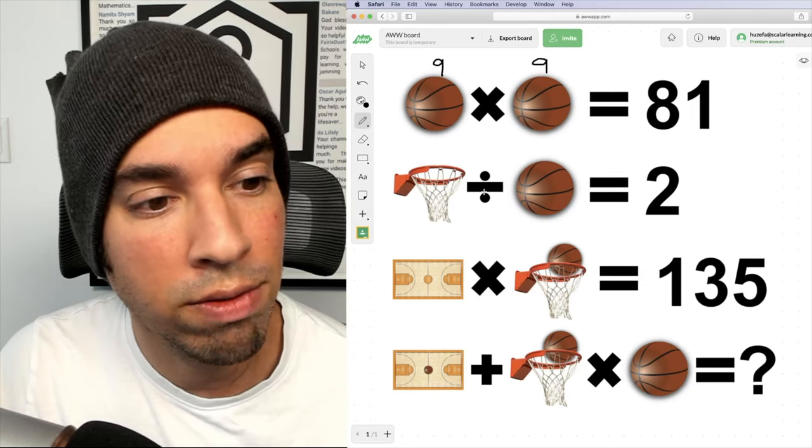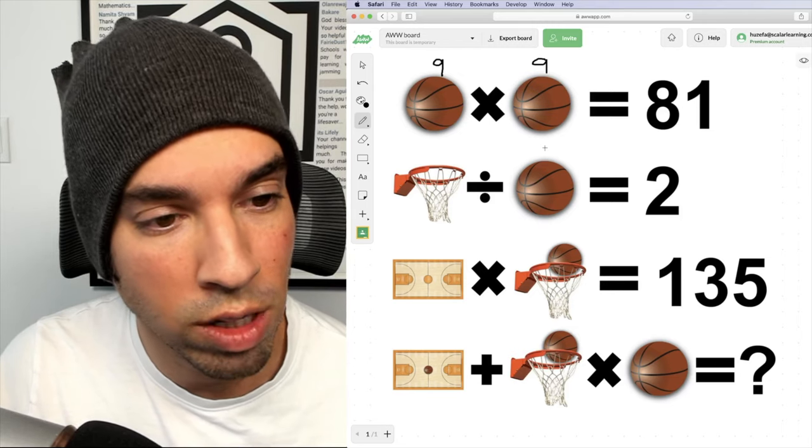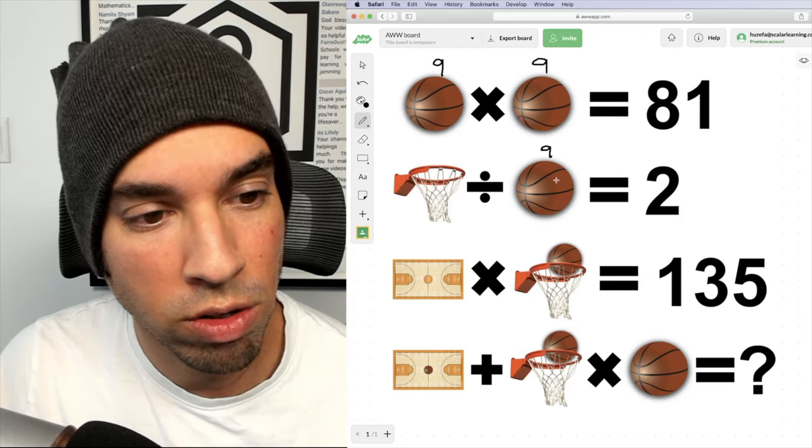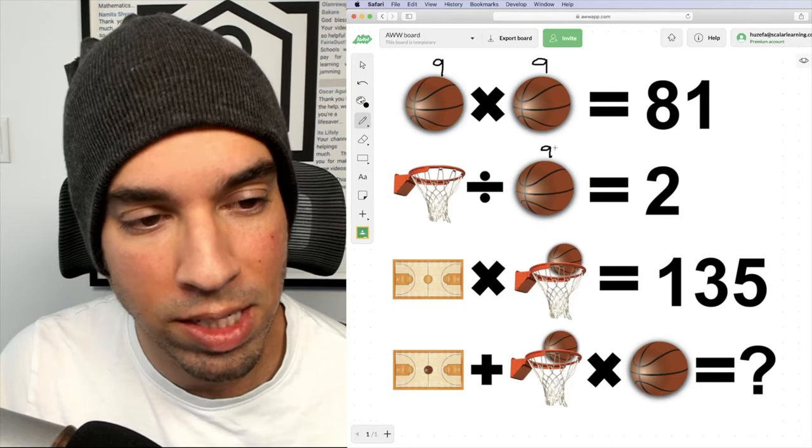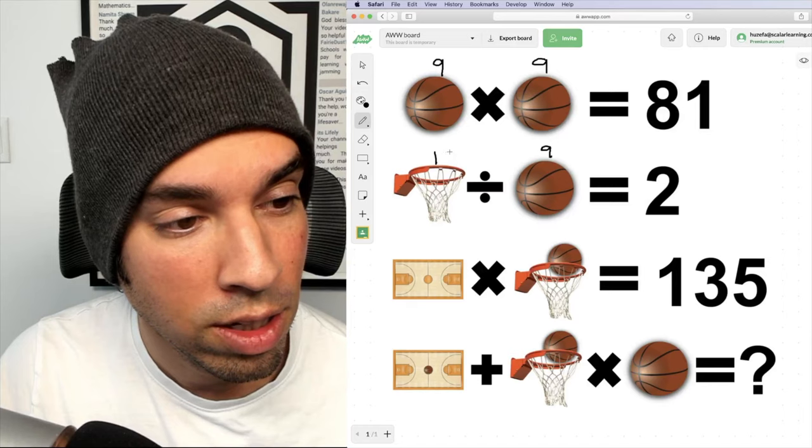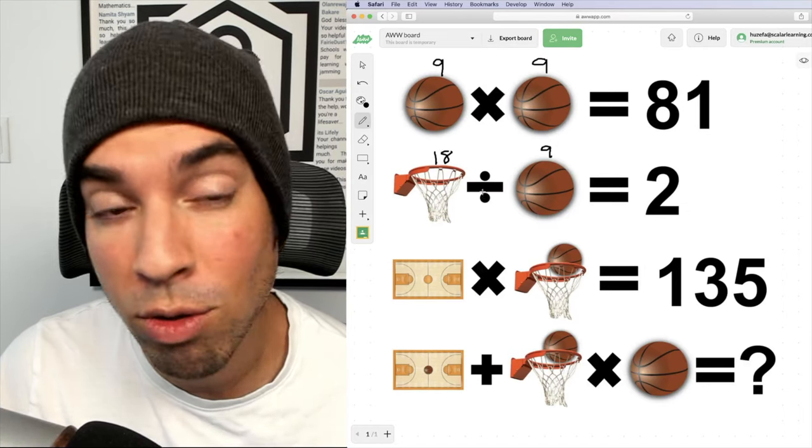Then we've got the hoop divided by the ball is two. So again, I'm going to put a nine here. So I know that that value is nine. And what divided by nine equals two? That of course is the same as asking two times nine is what? Which is 18. So now I got the value of the hoop.